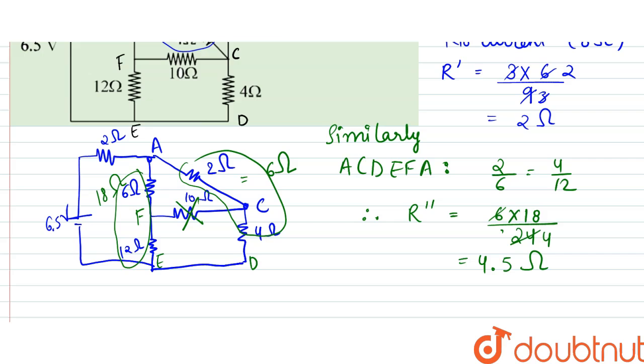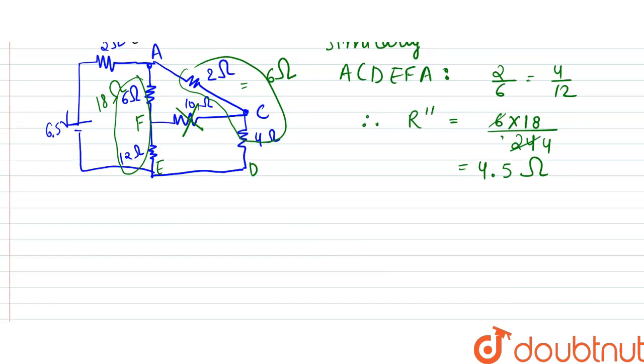So finally, our circuit would become like this. There would be a 2 ohm resistor here. There would be a potential 6.5 volt supply here. 2 ohm is here. Between A and E there is a resistance of 4.5 ohm.